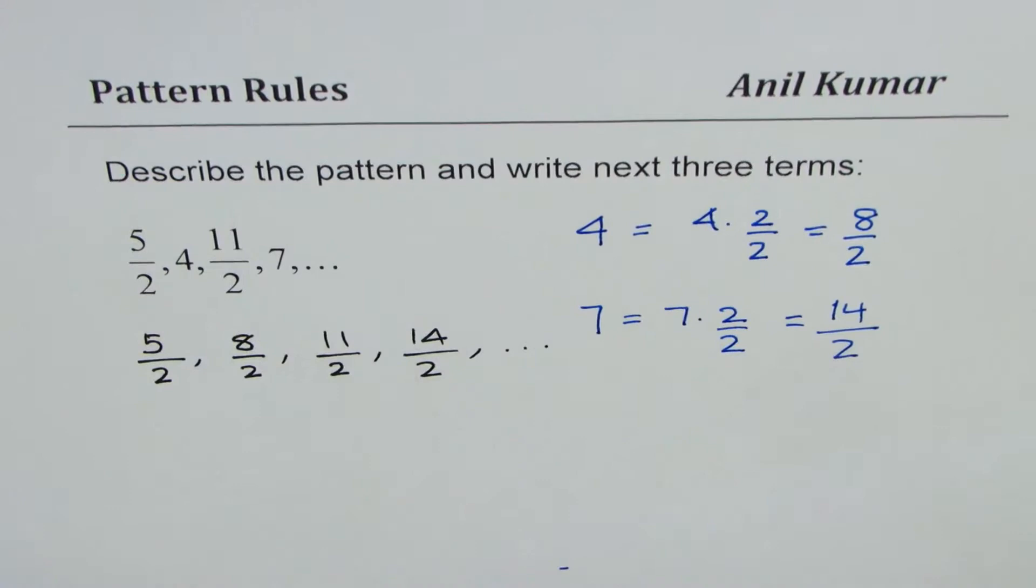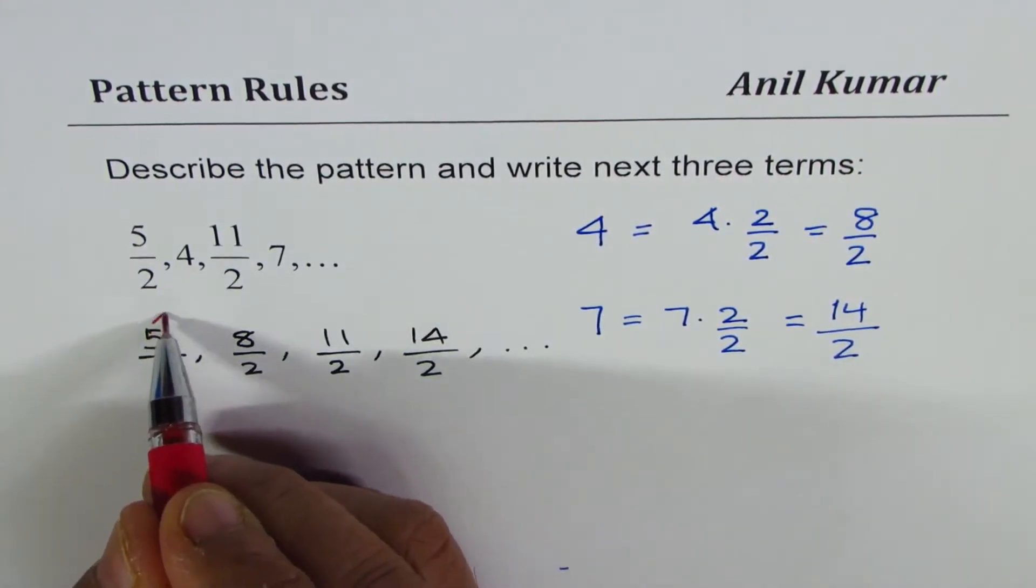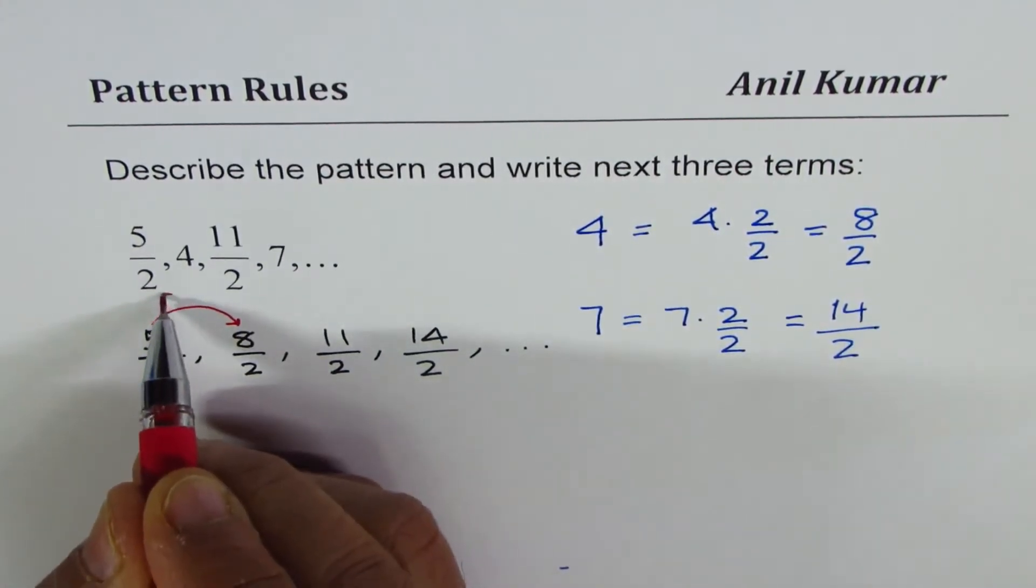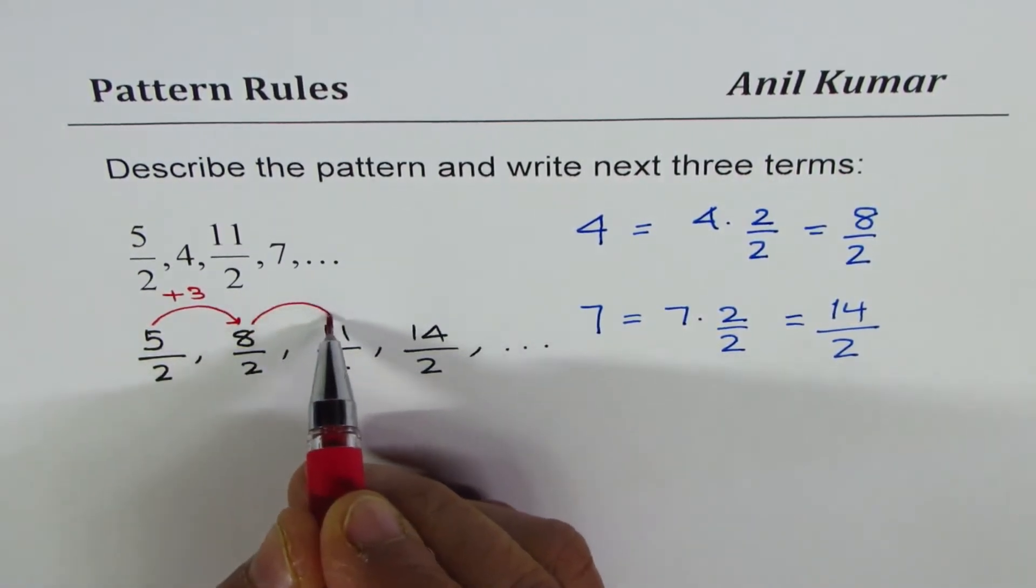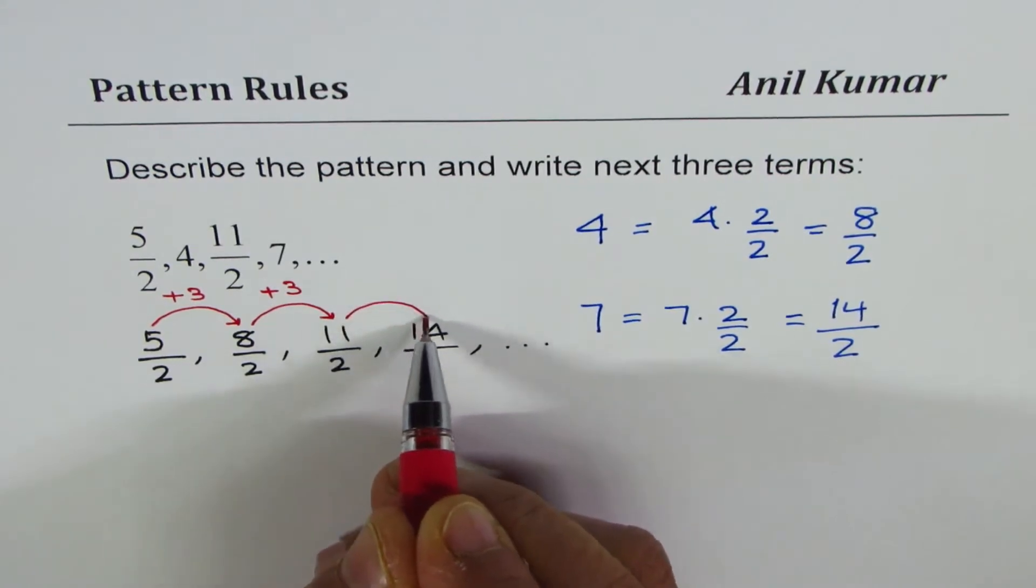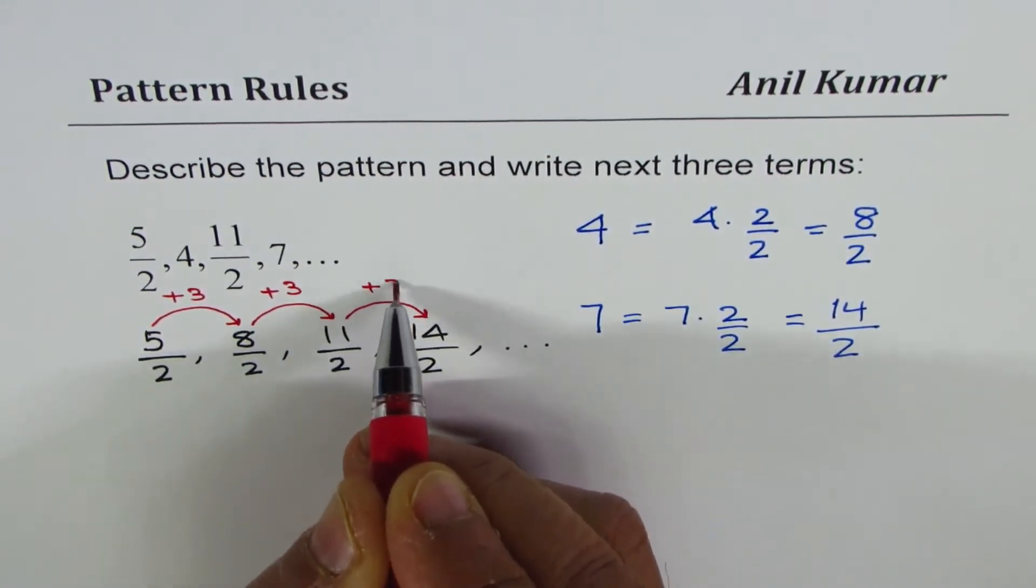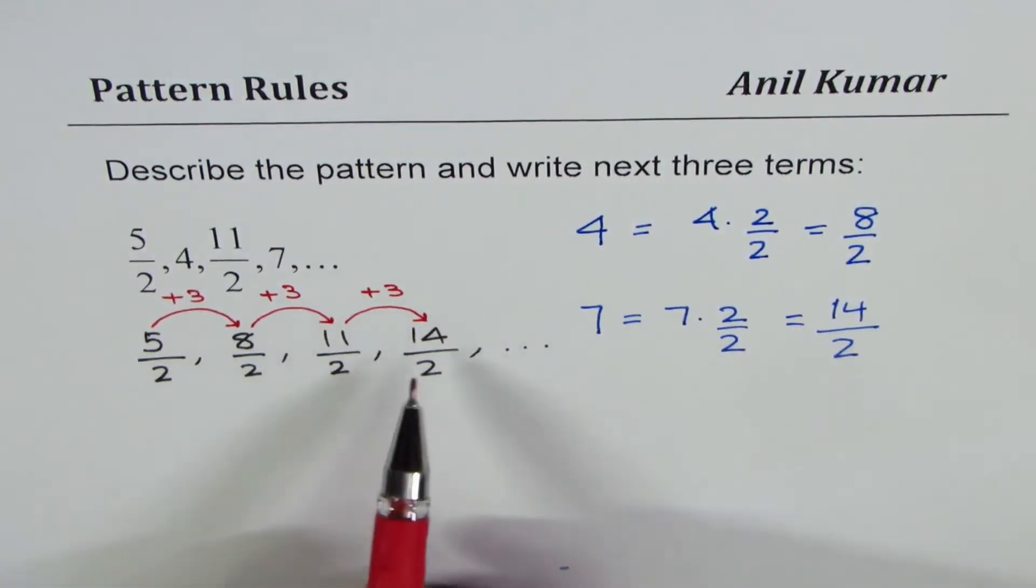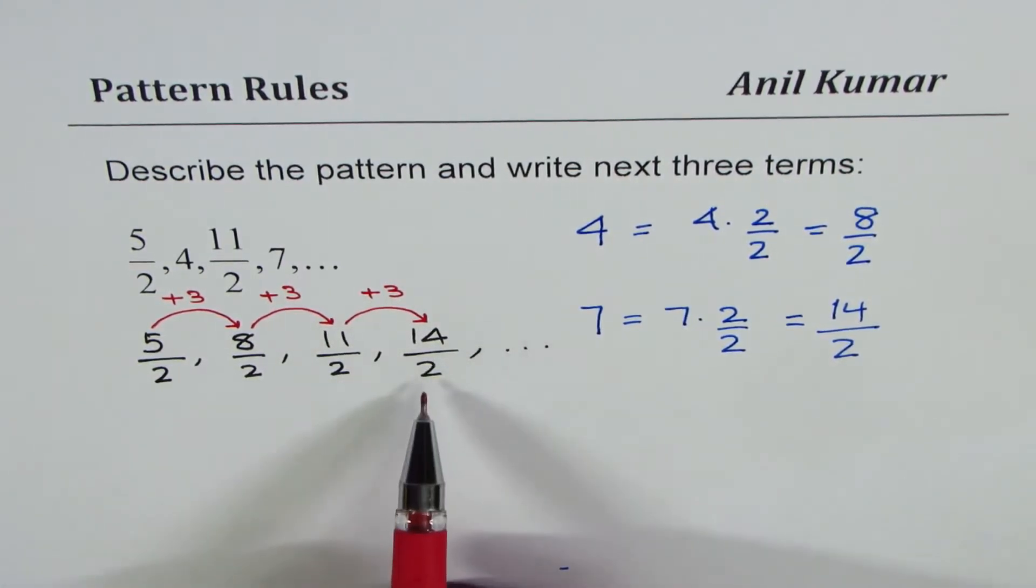Now, we have to write other terms. Do you see a pattern here? Well, the denominator is 2, however, the numerator is increasing. It is increasing by how much? So if you go from 5 to 8, it is increasing by 3. And then from 8 to 11, it again increases by 3. 11 to 14, plus 3. So every time in the numerator, we are adding 3, but the denominator remains 2.